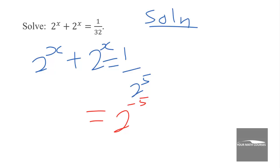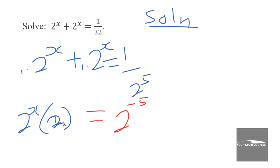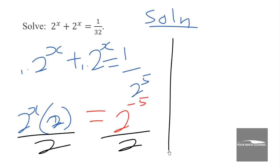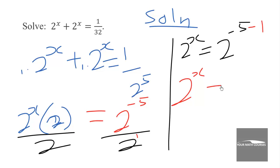We have 2 to the power x plus 2 to the power x, which is like 1 times 2^x plus 1 times 2^x. Factoring out 2^x gives us 2^x times (1 plus 1), which is 2^x times 2, equal to 2 to the power negative 5. The 2 is like 2 to the power 1 in the denominator, so 2^x equals 2 to the power negative 6. Since the bases are equal, x equals negative 6.